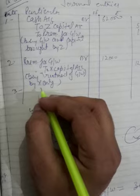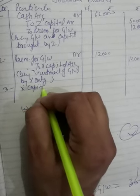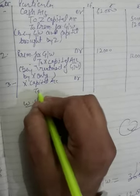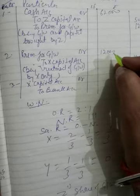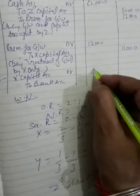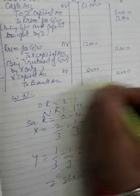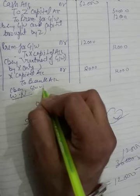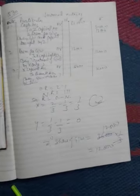Now, only X is sacrificing, that is why X will withdraw the amount of goodwill. X's capital account debit to Bank. The amount will be gathered by X only, so X will withdraw the same amount equal to ₹12,000 and ₹12,000. The narration: Being goodwill withdrawn.